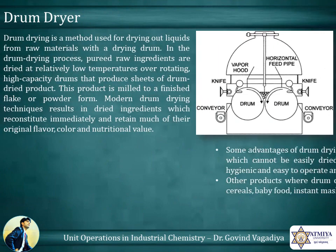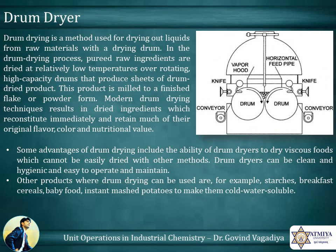Drum dryer: drum drying is a method used for drying out liquids from raw materials with a drying drum. In the drum drying process, raw ingredients are dried at relatively low temperatures over rotating high-capacity drums that produce sheets of drum-dried product. This product is milled to a finished flake or powder form. Modern drum drying techniques result in dried ingredients which reconstitute immediately and retain much of their original flavor, color, and nutritional value.